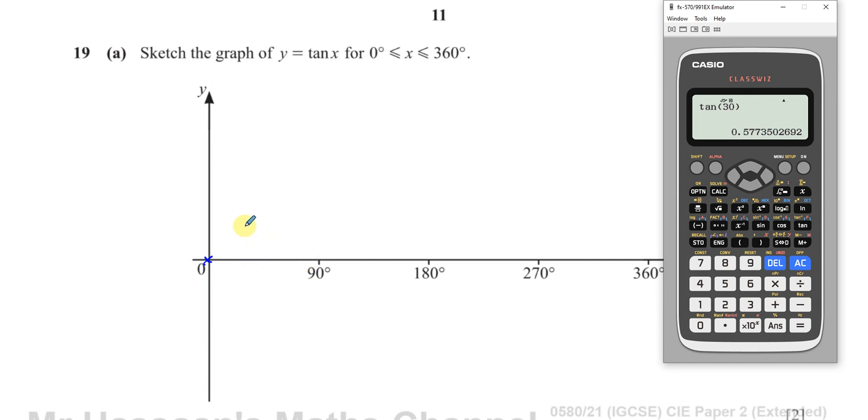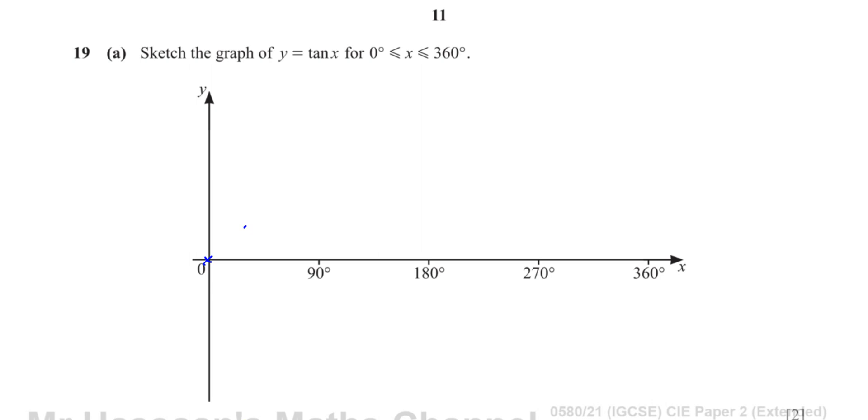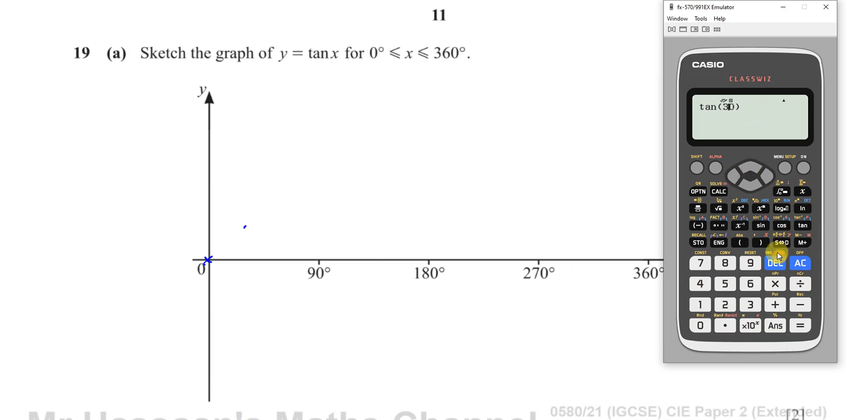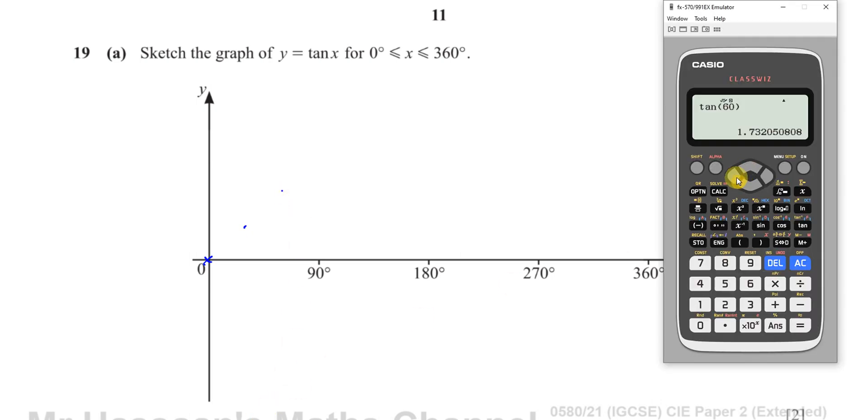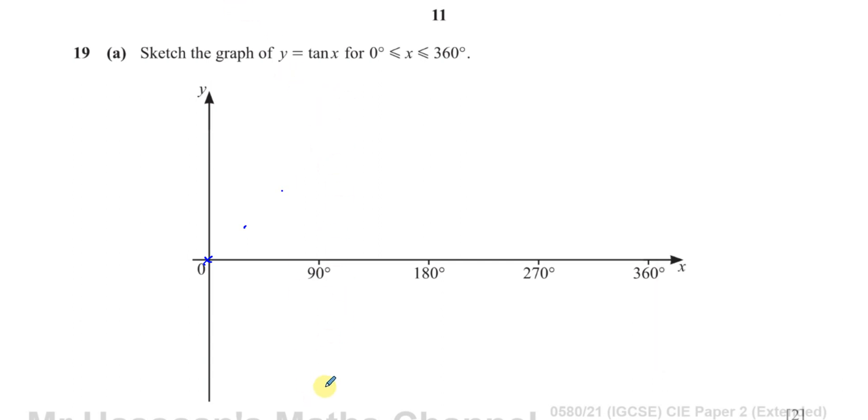Then you put 60 in there and you get the square root of 3 which is 1.73, so it's going up a bit more. And then when you put 90 in there, you'll see something that will be maybe a bit strange for you. It says math error meaning that it never actually hits 90 degrees. And 90 degrees is what's called an asymptote. An asymptote is like a line that it never touches.